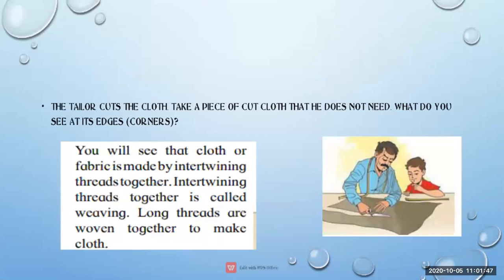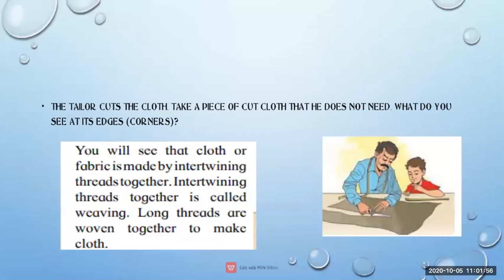Threads are joined and woven together. Interweaving threads together is called weaving. Long threads are woven together to make clothes. These are the big pieces of fabric from which clothes are made.